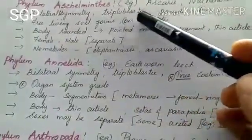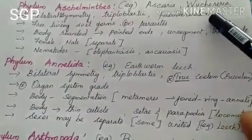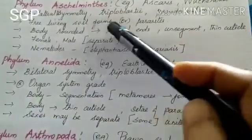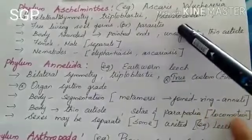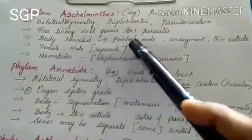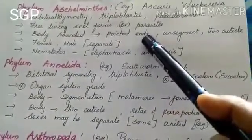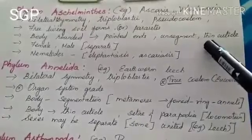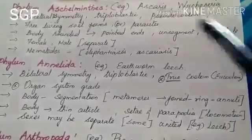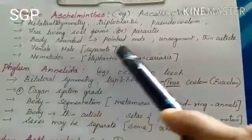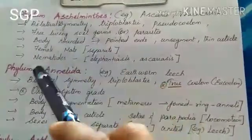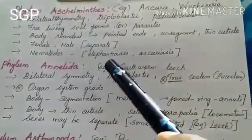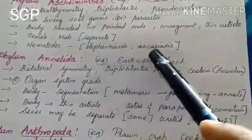The next phylum, Aschelminthes, is also triploblastic. Here a pseudocoelom — a false coelom — is present. They are free-living soil forms, though some organisms are parasitic. The body is rounded in shape with both anterior and posterior ends tapering to a point. The body shows unsegmentation and the body wall has a thin cuticle. Male and female organisms are separate. They are also known as nematodes.